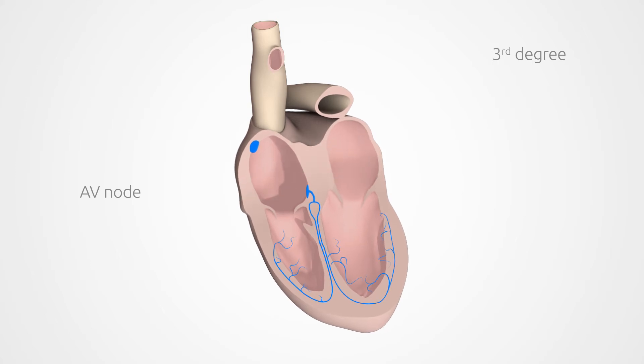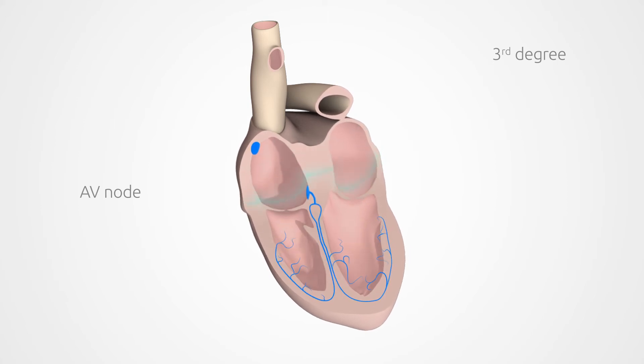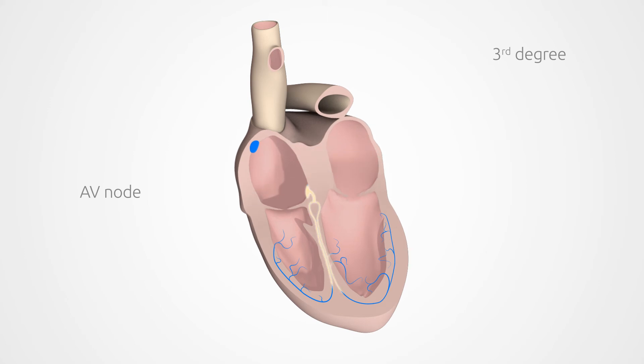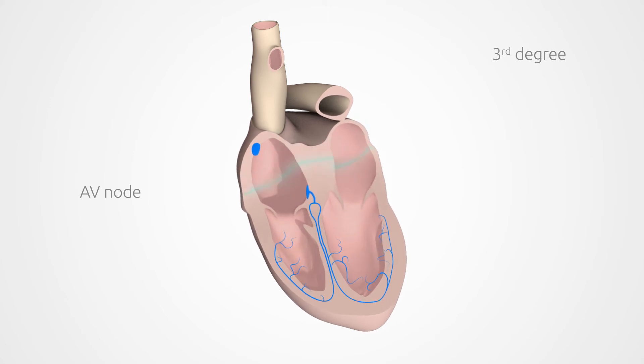As a result, the heart can no longer supply itself or other organs with enough blood. The possible effects of this include heart failure, fainting spells and cardiac arrest. People with complete AV-Block typically need to have a pacemaker.